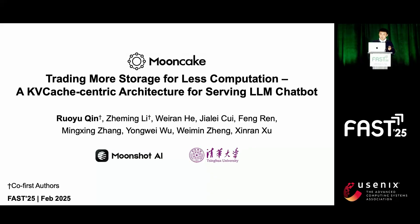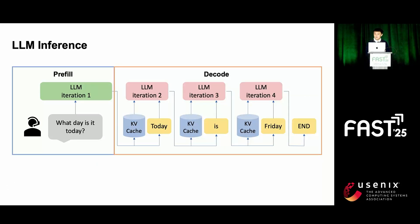Currently, it handles over 80% of traffic for Kimi and has reduced cost by more than half compared to our previous system. In transformer-based large language models, request processing is divided into two stages: prefill and decode. The prefill stage computes all input tokens and generates the first output token, while the decoding stage is autoregressive, processing one token at a time.